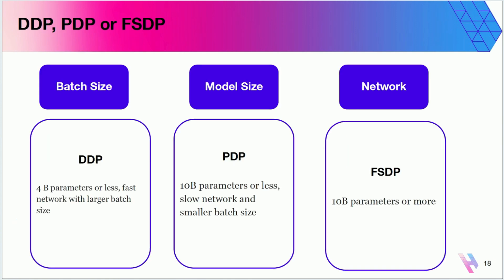Here's a quick high-level guideline, though you'll need to experiment on your own infrastructure. If you have a model of roughly 4 billion parameters or less with a relatively fast network and large batch size, you should start with distributed data parallelism — it's the easiest way to get started with fewer engineering trade-offs. For 10 billion parameters or less with a slow network and smaller batch size, use pipeline data parallelism, which splits your all-reduce into two rings to speed up the process. And for models larger than 10 billion parameters that don't fit in a single GPU, you're better off using FSDP.